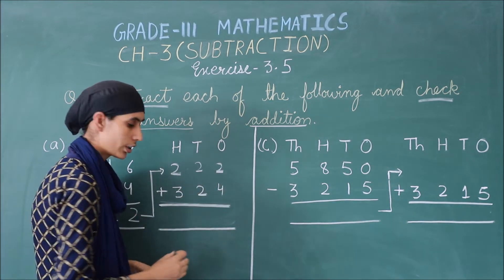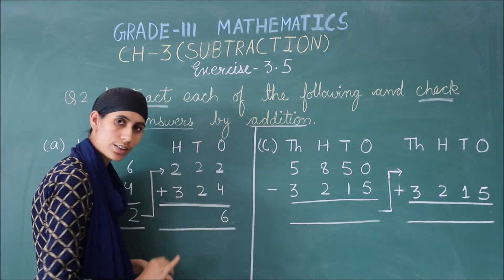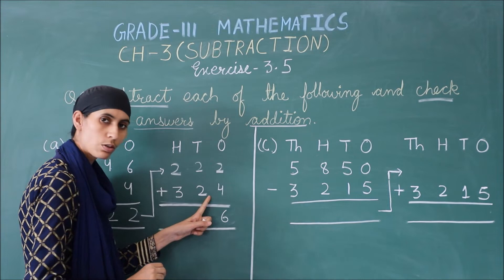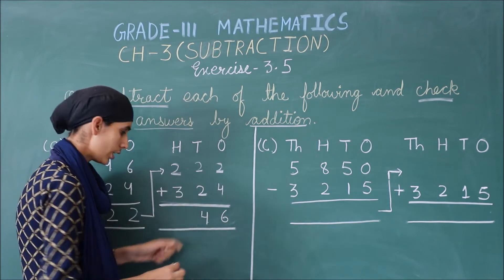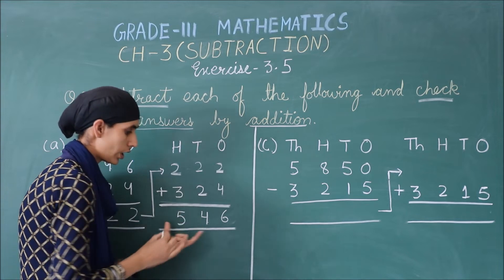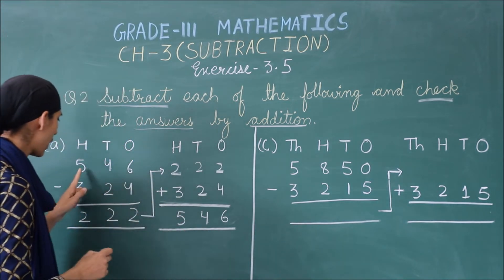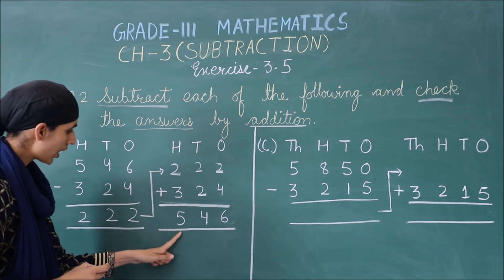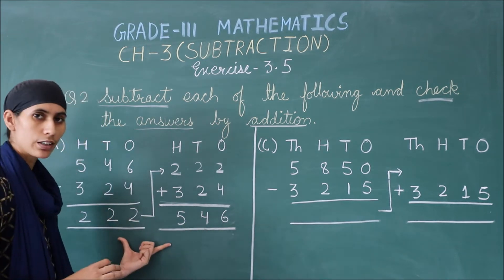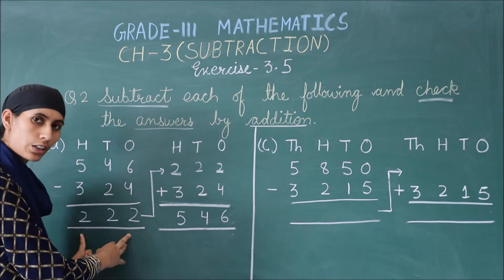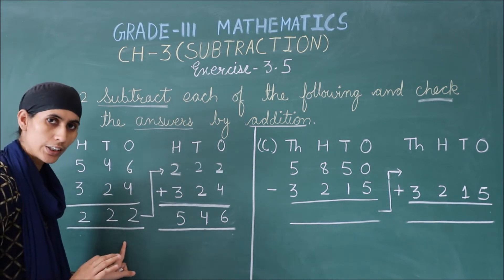Now we add it. So, 2 plus 4, what happens? 6. 2 plus 2, 4. 2 plus 3, 5. Now we match our answer, we are having here 546, and your answer is 546, so what do we know from this, that our subtraction was completely solved correctly.